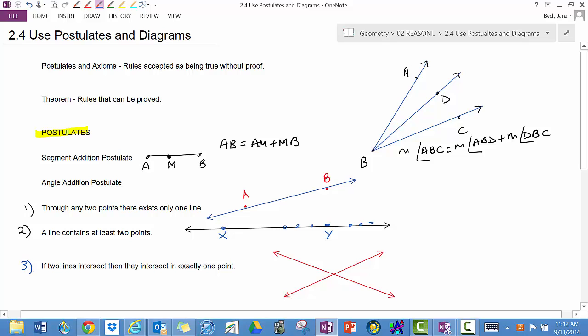Number three. If two lines intersect, they intersect in exactly one point. This is the point of intersection. Let's call this P. And just a reminder, angles that sit across from each other are called vertical angles. They are congruent. Angles that are adjacent to each other on a straight line are called linear pairs, and they add up to 180.